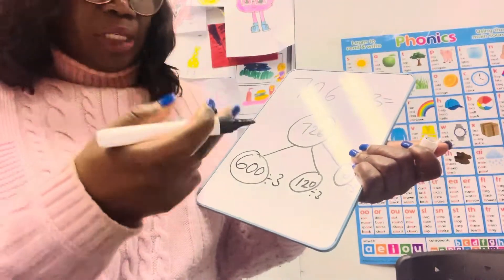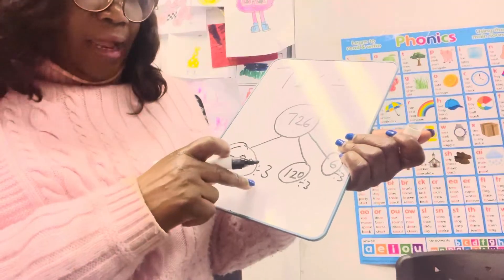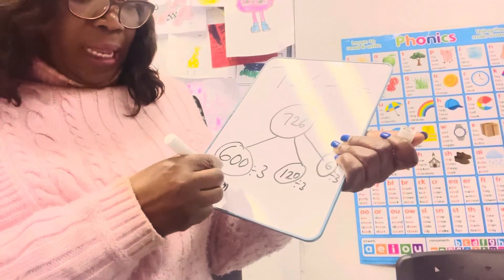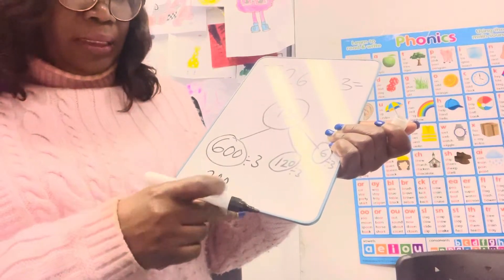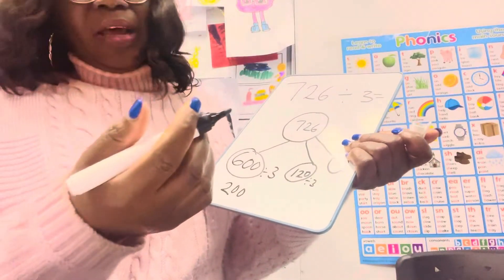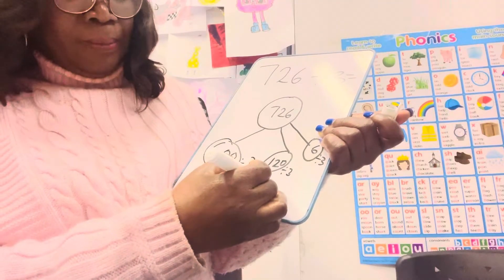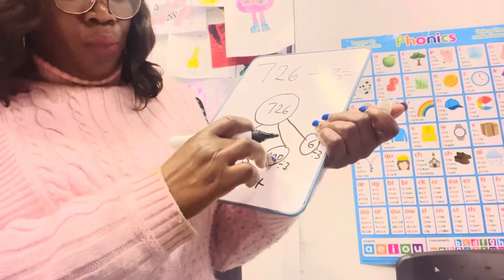We may not be able to know how to divide 600 divided by 3 straight away, but we know 6 divided by 3 is 2, and because we have two zeros we just add two zeros next to it. It's as simple as that. We might not know 120 divided by 3 right away, but we know 12 divided by 3 is 4.